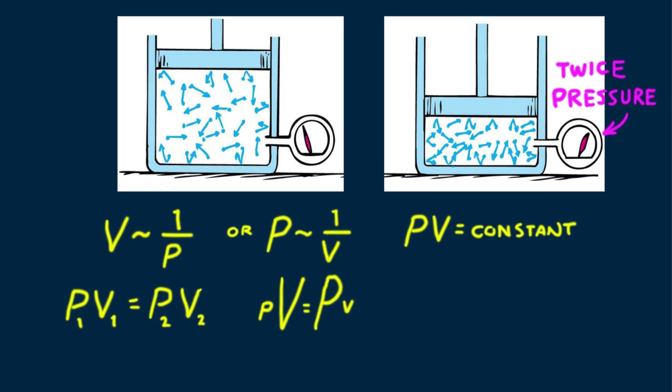This relationship between pressure and volume is called Boyle's Law, after scientist Robert Boyle, who discovered the relationship with his own experiments in the 17th century. Boyle's Law applies to ideal gases — by ideal gas is meant a gas in which the disturbing effects of the forces between molecules and the finite size of individual molecules can be neglected. Air and other gases under normal pressures approach ideal gas conditions.